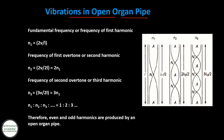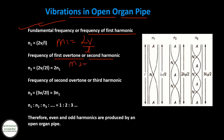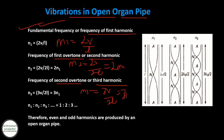Vibrations in an open organ pipe: fundamental frequency (first harmonic) is n1 = V/(2L). First overtone (second harmonic) is n2 = 2V/(2L) = 2n1. Second overtone (third harmonic) is n3 = 3V/(2L) = 3n1. So n1 : n2 : n3 = 1 : 2 : 3. Therefore, both even and odd harmonics are produced by an open organ pipe.